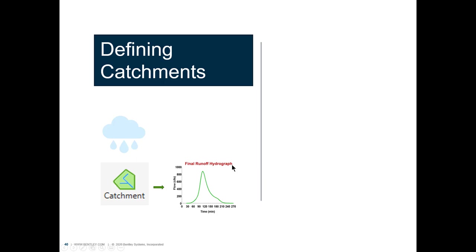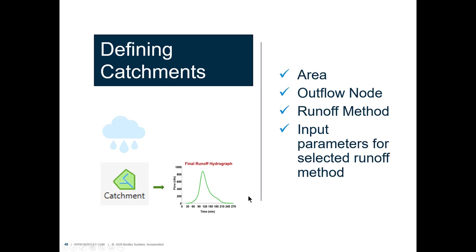For a catchment, we need to know the catchment's area and which is the outflow node. We need to specify which method we're going to use to calculate runoff, and depending on the method, we'll need to input more or less parameters.